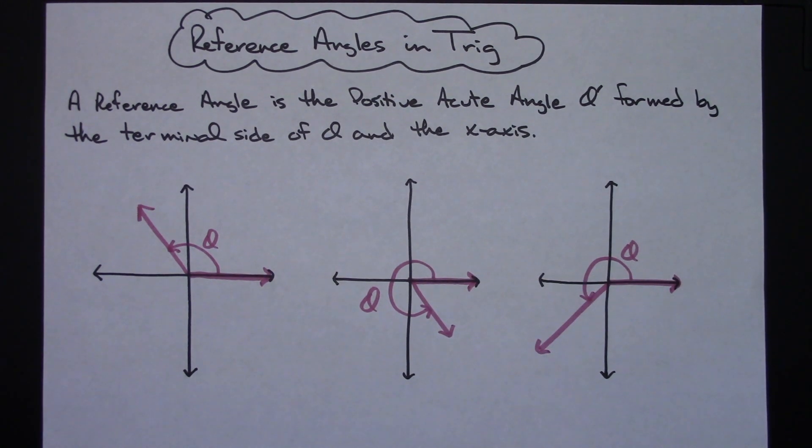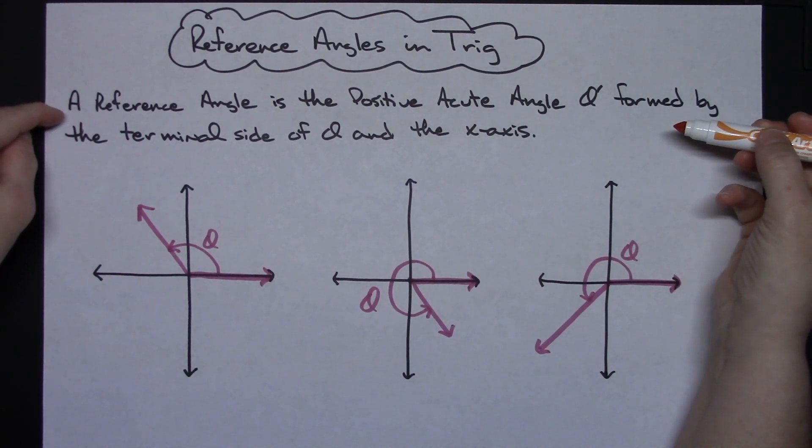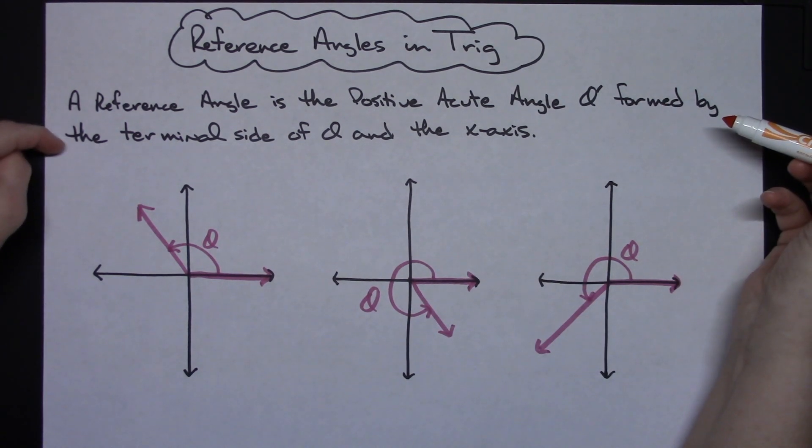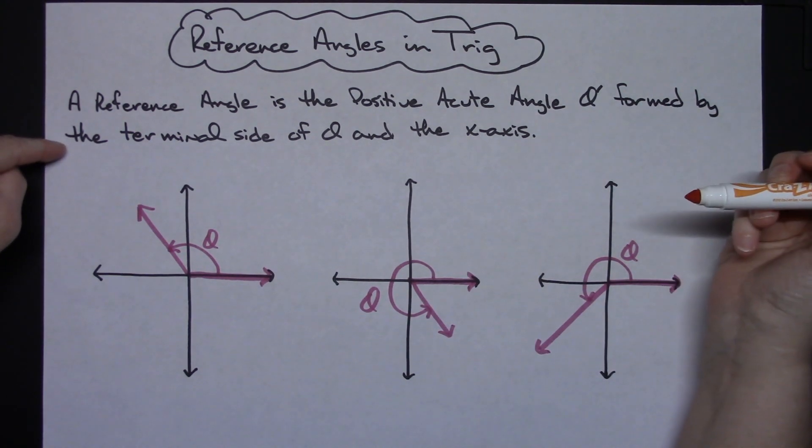In this video I'm going to be showing you how to find a reference angle in trig. We'll start with the definition. A reference angle is the positive acute angle theta prime formed by the terminal side of theta and the x-axis.